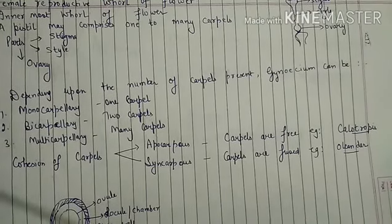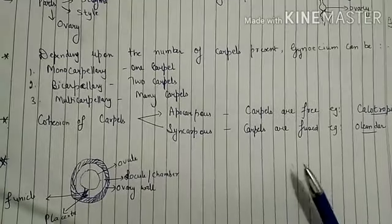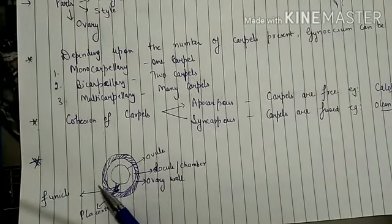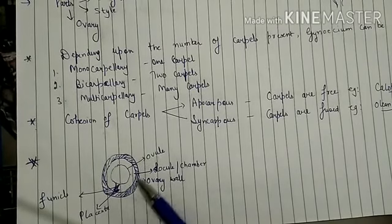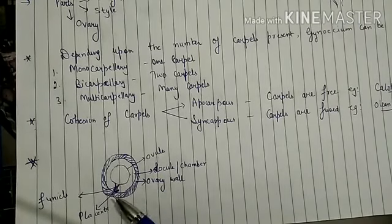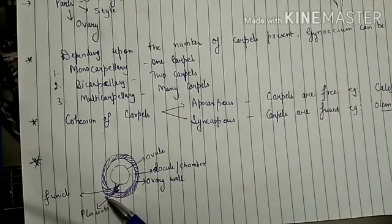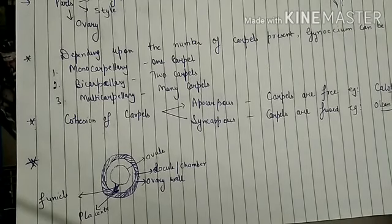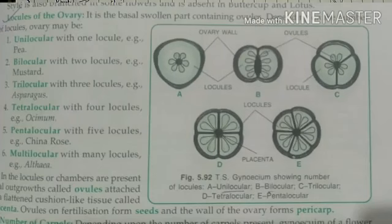Before studying the ovary based on number of locules, you should know what a locule is — it is basically a chamber inside the ovary wall which encloses the ovules. The ovule is attached to the ovary wall through a stalk called funicle, and there is a tissue called placenta which attaches the ovule to the ovary wall. Depending on the number of locules, the ovary may be unilocular, bilocular, trilocular, or multilocular.